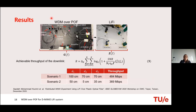For the WDM over PoF estimation, we estimated the achievable throughput using SVD values for two different scenarios with different distances between the ceiling nodes and user nodes. We got 484 megabits per second for scenario one and 369 megabits per second for scenario two, using the 45-degree dichroic filter. We believe the results will be very similar using the zero-degree filter, since both demultiplexers have similar crosstalk and loss performance.